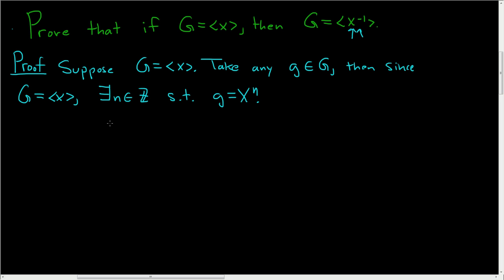So the natural thing to look at is g inverse. Then g inverse is x to the n inverse, and this can be written as x to the negative n, and this can be written again as x to the negative 1 to the n. And this is in the cyclic group generated by x inverse.